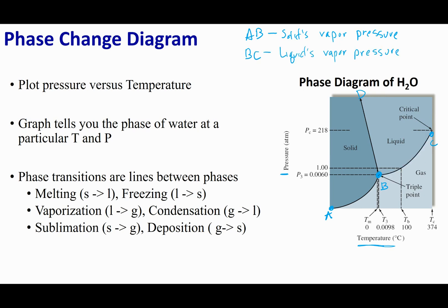Lastly, we have the segment B-D, which is the line between solid and liquid. That line is defined by where the solid's vapor pressure equals the liquid's vapor pressure. When these two are equal, that forms the line segment B-D.